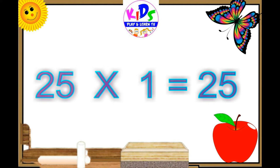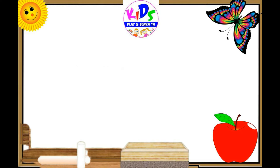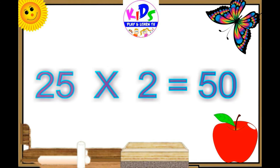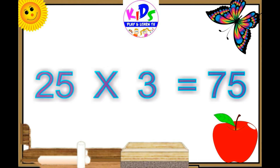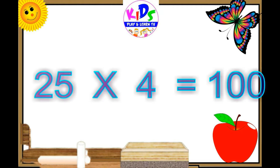Twenty-five ones are twenty-five. Twenty-five twos are fifty. Twenty-five threes are seventy-five. Twenty-five fours are one hundred.